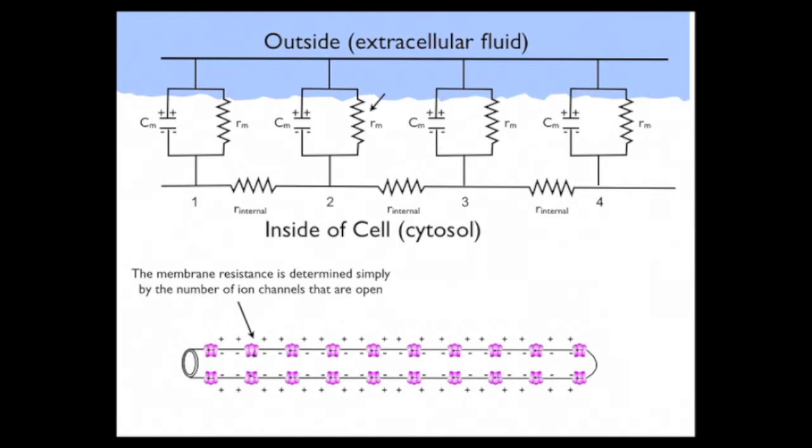If we open another channel, even more current can flow, and the resistance is further reduced. Hence, the membrane resistance simply is an indication of how many open ion channels there are in the membrane at any one time.